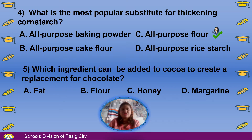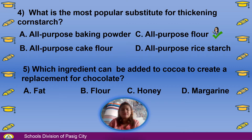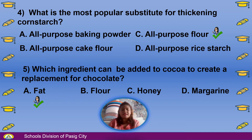Number 5: Which ingredient can be added to cocoa to create a replacement for chocolate? A. Fat, B. Flour, C. Honey, D. Margarine. The answer is A, Fat.